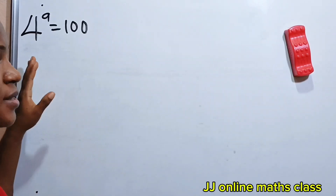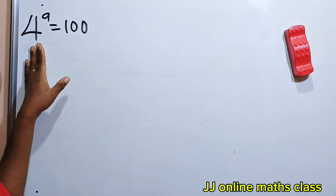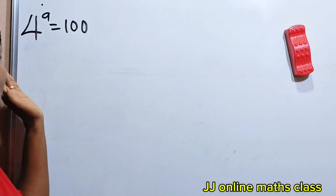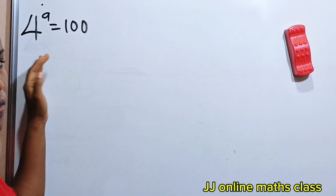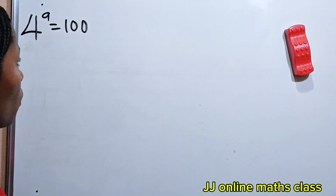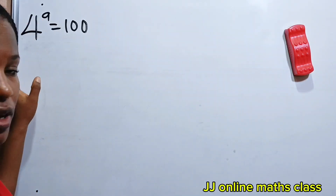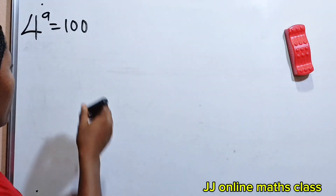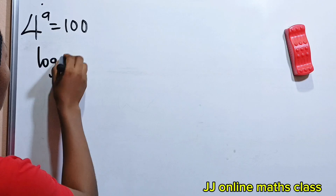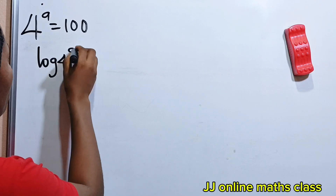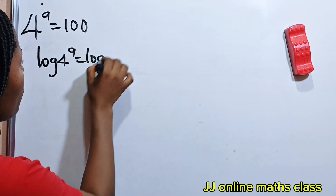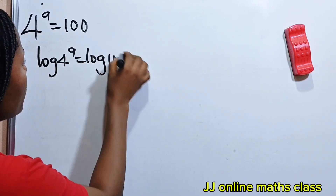Hi everyone, let's solve for the value of A. First we need to introduce log to both sides of the equation, since what we are looking for is the exponent. So we are going to write log 4 to the power of A is equal to log 100.